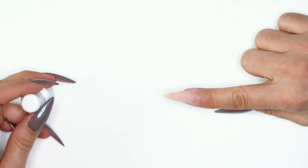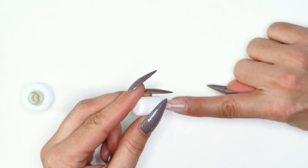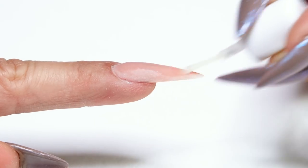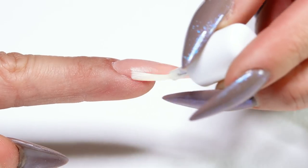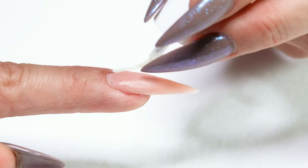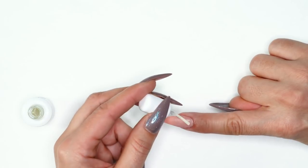Now that it's all filed and shaped, I'm going to grab my protein bond and apply it over the top. Protein bond is just going to help eliminate any chipping or peeling of the gel polish that I'm going to apply over the top of the enhancement.